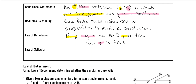When I highlight sentences, I'll use yellow and pink. If the pattern goes yellow, pink, yellow, pink — that's the Law of Detachment. That's all it's saying: if p → q is true and p is true, then you can say that q is true.